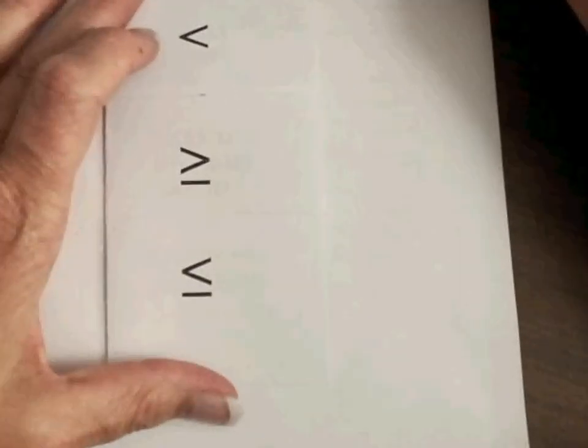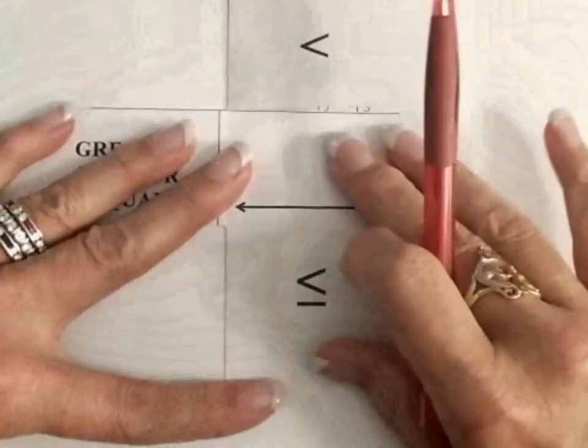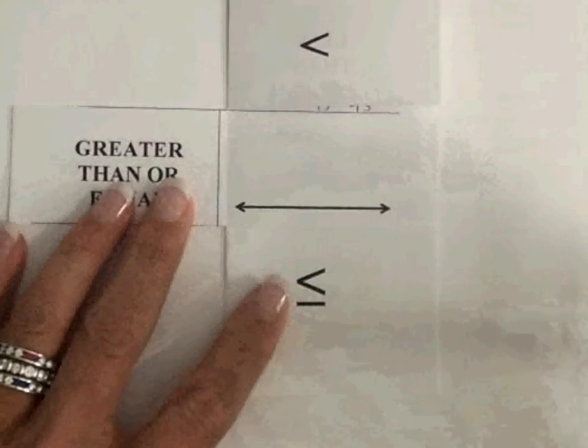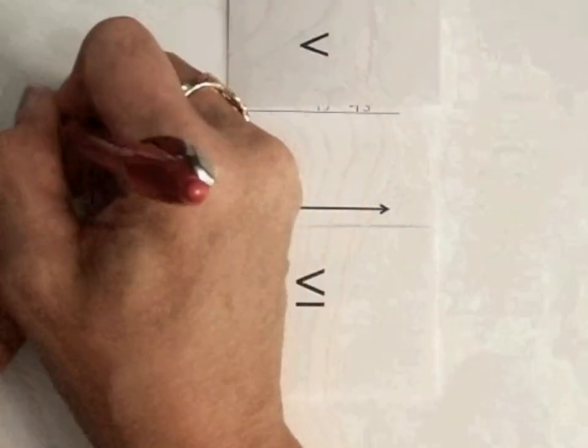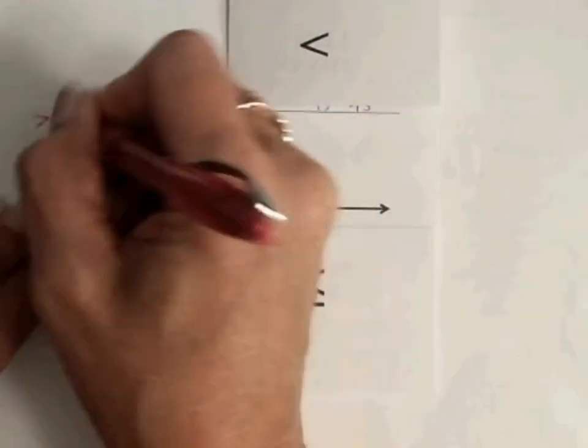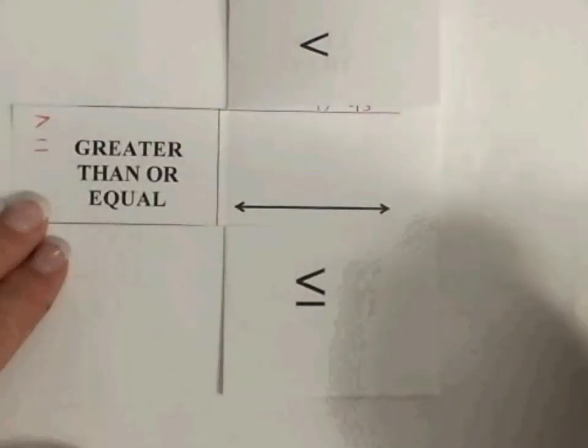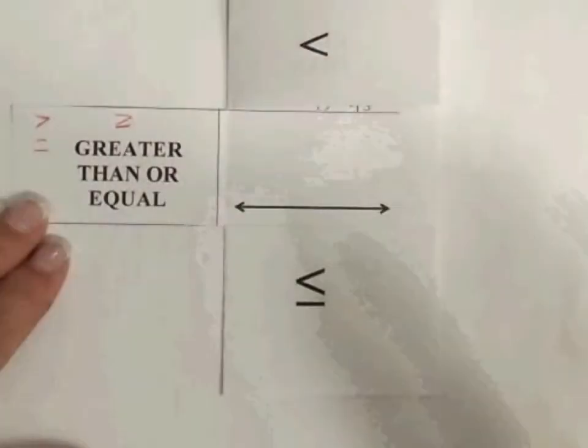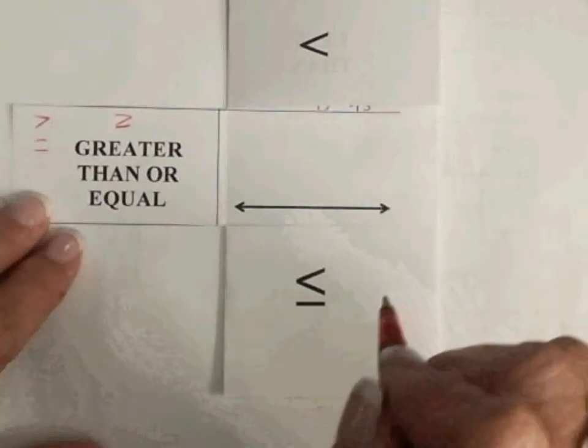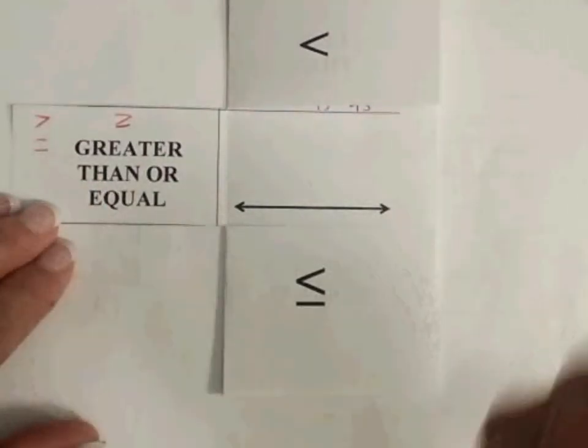So now we're going to go to our next example, which is greater than or equal to. So what they did when they did greater than or equal to, is they took the greater than sign, and they took the equal to sign, and they combined those signs together. So the little line that goes underneath the greater than sign means that it's equal to as well as being greater to.